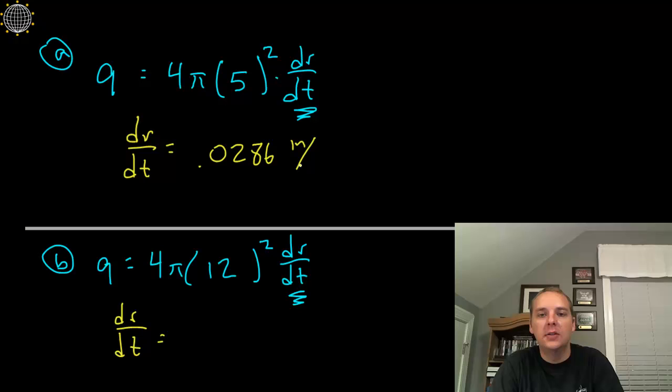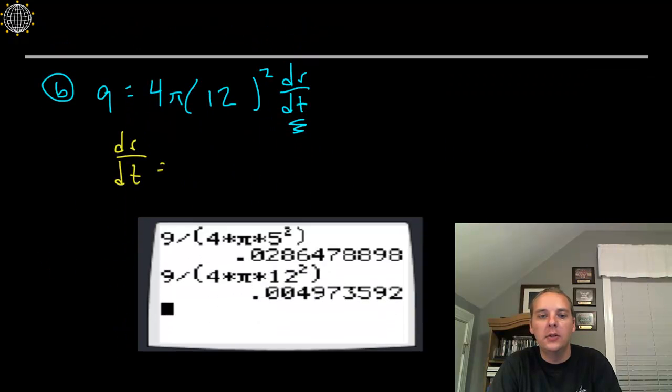That's inches per minute, and the other is as we guessed, as we anticipated, much smaller, 0.00497 inches per minute.